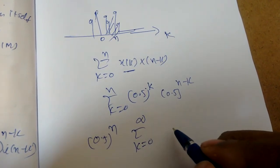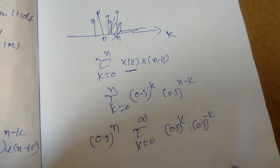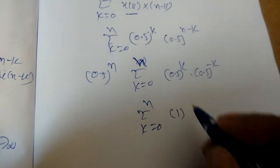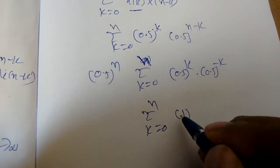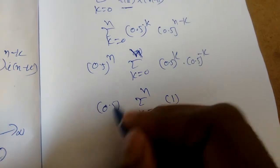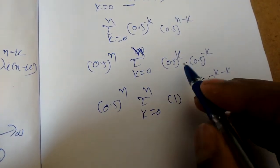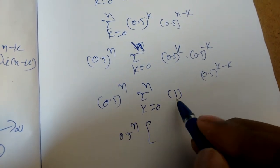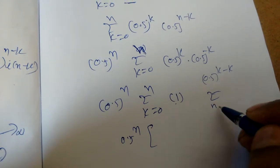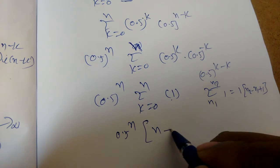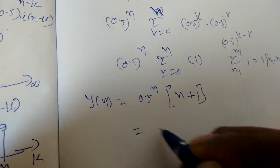After factoring out (0.5)^n, the remaining term is (0.5)^k * (0.5)^(-k) = (0.5)^0 = 1 for each term. So the summation from k = 0 to n of 1 gives (n+1). Using the formula: sigma of a constant = constant * (upper limit - lower limit + 1), the upper limit is n and lower limit is 0, giving (n+1). Therefore y(n) = (n+1) * (0.5)^n.